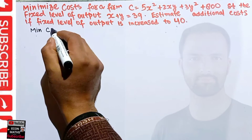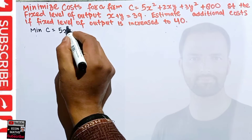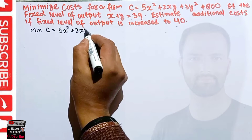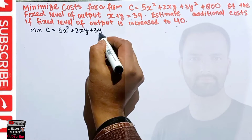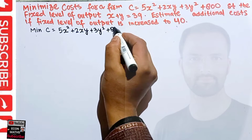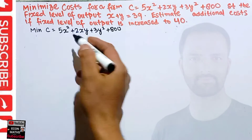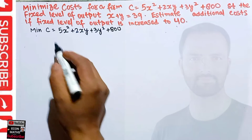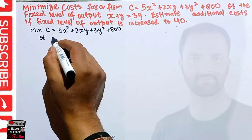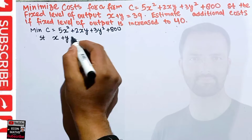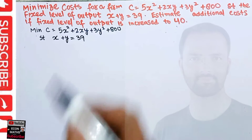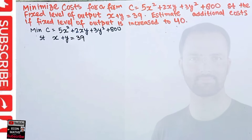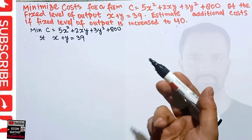First of all, we want to minimize our cost: C = 5x² + 2xy + 3y² + 800. This is our minimization problem, subject to the production quota x + y = 39. To find the optimal values of x and y — the optimal values of the products — we need to form the Lagrange function.